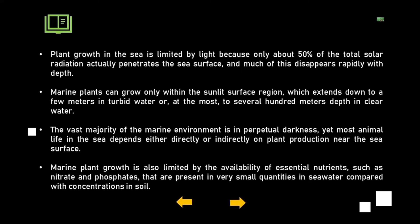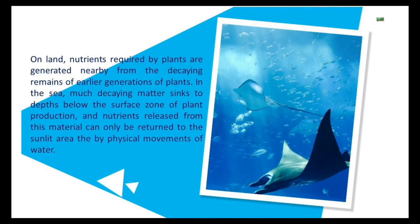Plant growth is limited in certain areas of the sea by the availability of essential nutrients required by flora and fauna to survive, such as nitrates and phosphates. These are present in very small quantities in seawater compared with the concentrations found in soil on land. Nutrients required by plants are generated nearby from the decaying remains of earlier generations of plants.